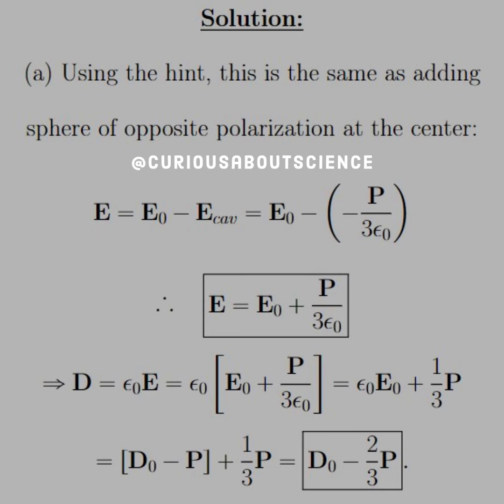This is the same as adding a sphere of opposite polarization at the center. Therefore, E equals E0 minus E cavity, which is just what we found a couple questions ago, negative P over 3 epsilon naught. So take the difference, and we're left with E equals E0 plus P over 3 epsilon naught.